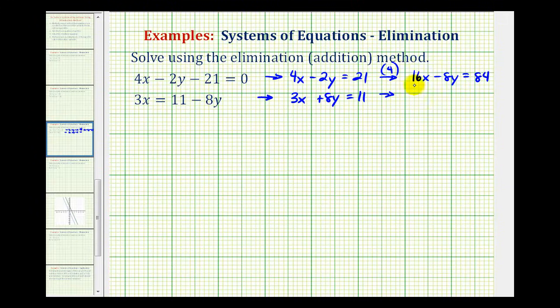The second equation is going to stay the same, so we have 3x plus 8y equals 11.